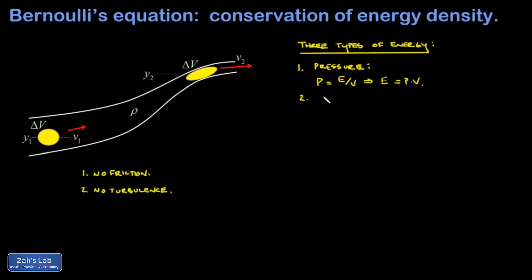All right, the others here are more straightforward. I have gravitational potential and kinetic, which we're quite familiar with at this point. So Bernoulli's equation is simply saying that the energy in this blob must be the same as it travels from point 1 to point 2.